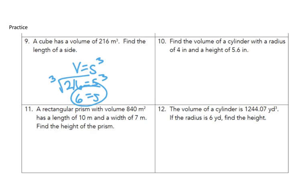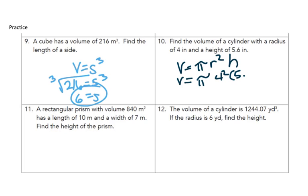Find the volume of a cylinder with a radius of 4 and a height of 5.6 inches. So volume equals pi r squared h. We are going to take pi times our radius, which is 4, squared times our height, which is 5.6. So our volume is 89.6 pi. Now we're going to use 3.14 for pi, which will give us 281.34.